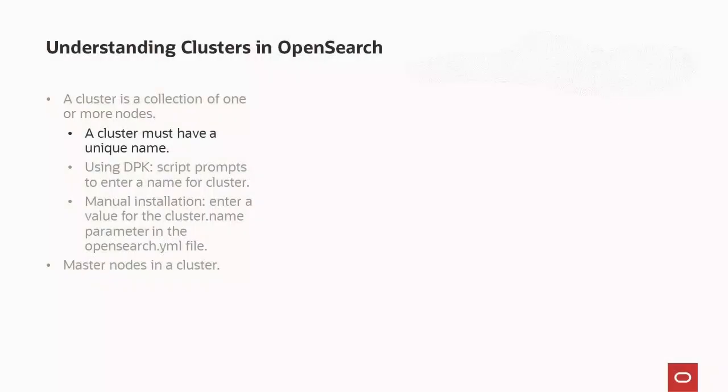Cluster name must be unique. The default cluster name is OS cluster. However, you can override the default cluster name. The cluster name is important because a node can only be part of a cluster if the node is set up to join the cluster by its name. Make sure that you don't reuse the same cluster name in different environments; otherwise, you might end up with nodes joining the wrong cluster.